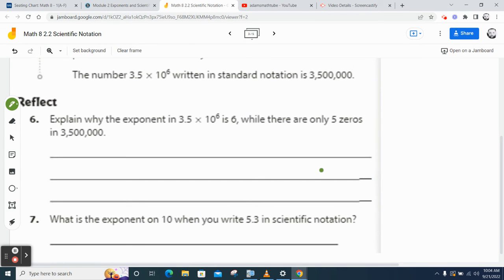So it says, explain why the exponent 3.5 times 10 to the six is six, and there are only five zeros. So how do I put that in words? In other words, what they're saying is I have a six here, but when I look at this, I only have one, two, three, four, five zeros. Your textbook has a really fancy answer, but I'm curious to how you would say it.